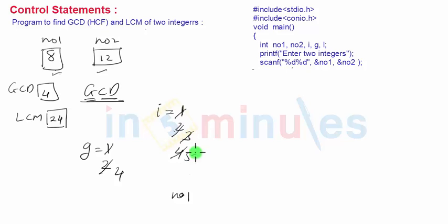Then 5 no, 6 no, 7 no, 8 no. At 9 we have to stop because we have to check only up to number 1. So the last value stored in g is the greatest common divisor.